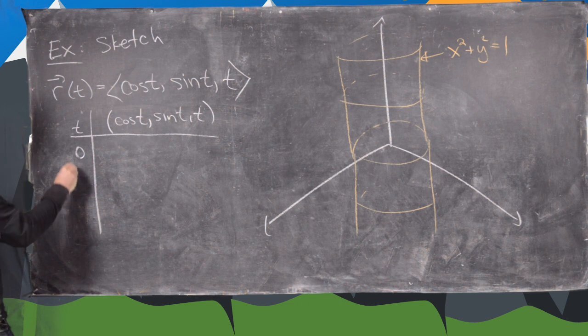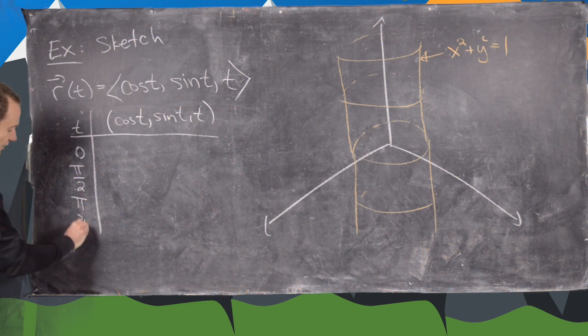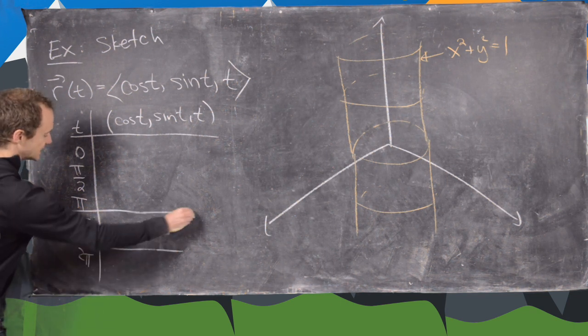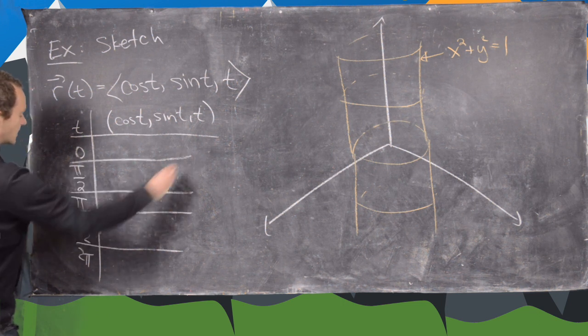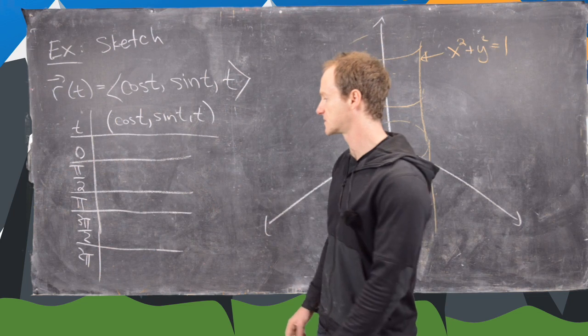So t equals 0. Maybe the next thing will be t equals pi over 2, pi, 3 pi over 2, and 2 pi. So why I'm choosing those is because I have trig functions and those kind of values are easy to plug into trig functions.